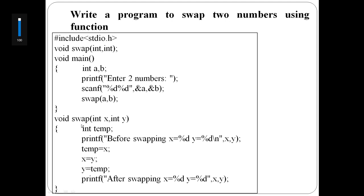Here, swap is the function name and the arguments are x and y. Both are integer numbers. The values are passed to this function and inside this function, first of all, print the current value of x and y.